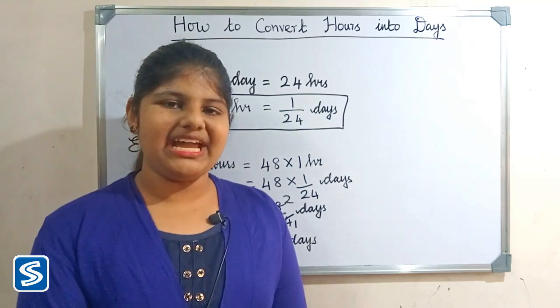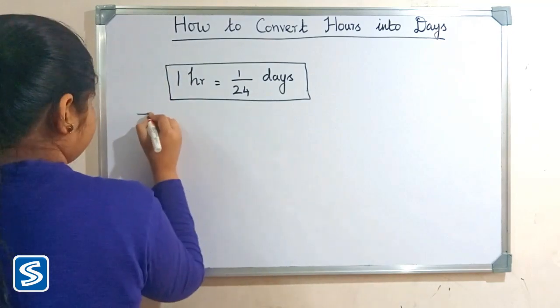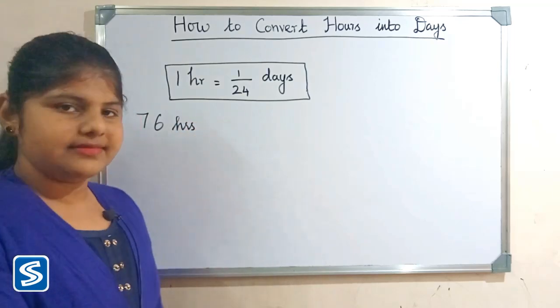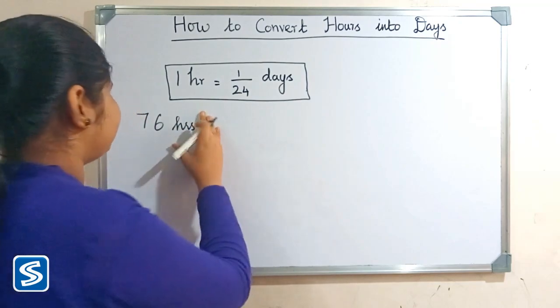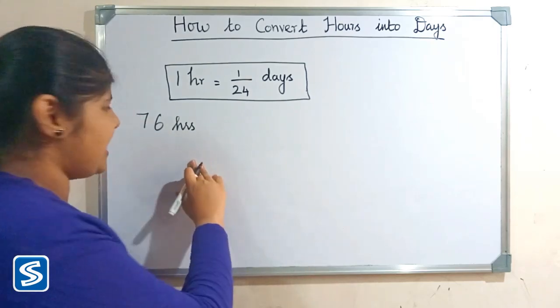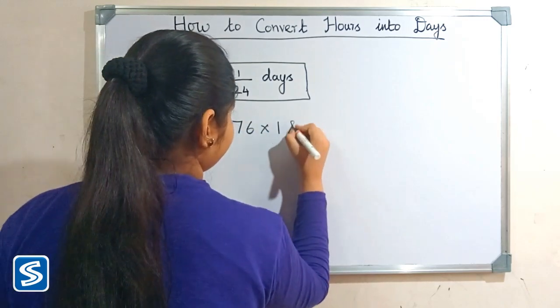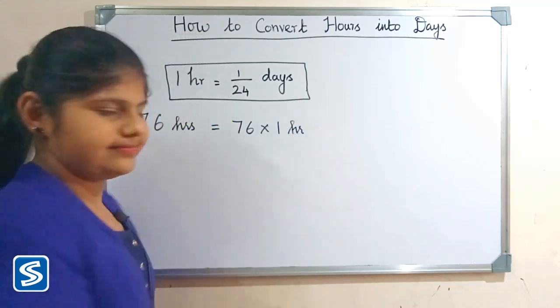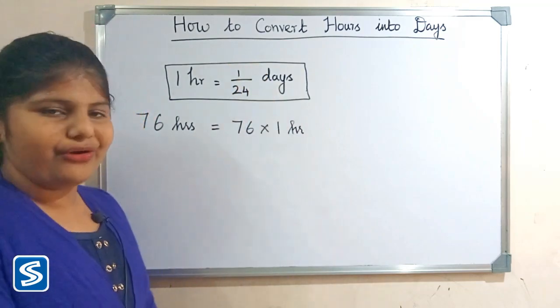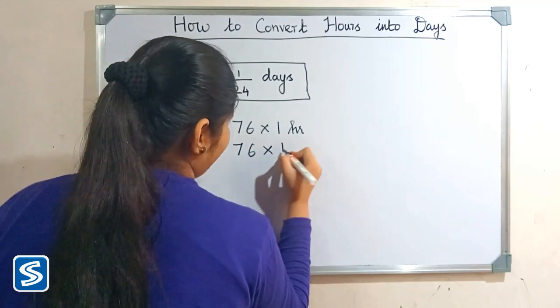Next we will take one more example. For example, we can take 76 hours. So 76 multiply one